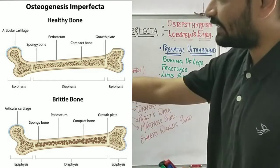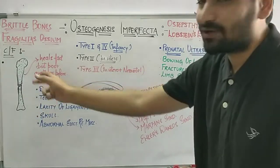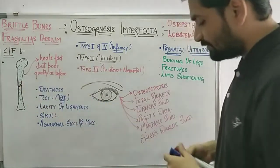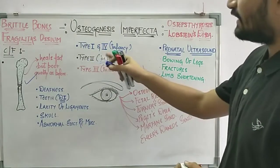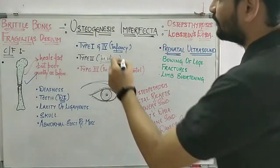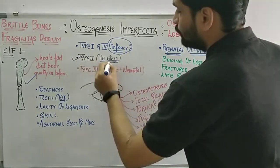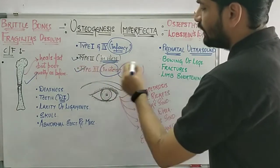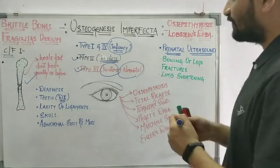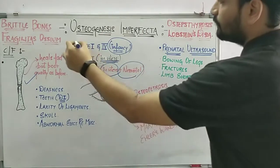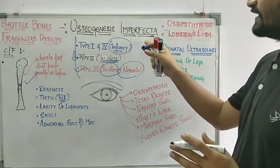Fractures will heal fast without taking much time, but the quality of the bone will remain the same — fragile and porous — so fractures will recur. Type 1 and type 4 OI are mainly seen in infancy. Type 2 is seen in utero. Type 3 is seen both in utero and in the neonatal period. There is no specific gender predilection.